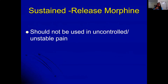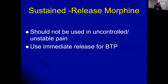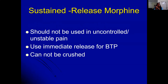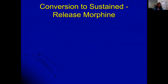Sustained-release morphine is used when patients struggle with four-hourly dosing — too many medicines, missing timings, or no caregiver. It is more expensive than immediate-release tablets. It is only used once the dose requirement is established and should never be used for unstable or uncontrolled pain. For breakthrough pain, immediate-release tablets must be used as rescue doses, not sustained-release formulations. For patients on nasogastric tubes, use immediate-release tablets only.